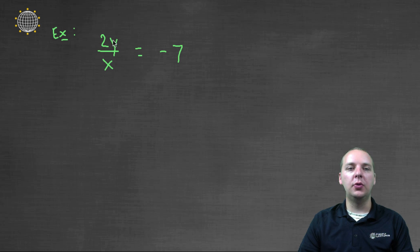Alright, how about this example, two y over x equals negative seven. It has two variables. The exponents are one, but do you see this x right here, do you see how it's in the denominator of the fraction?